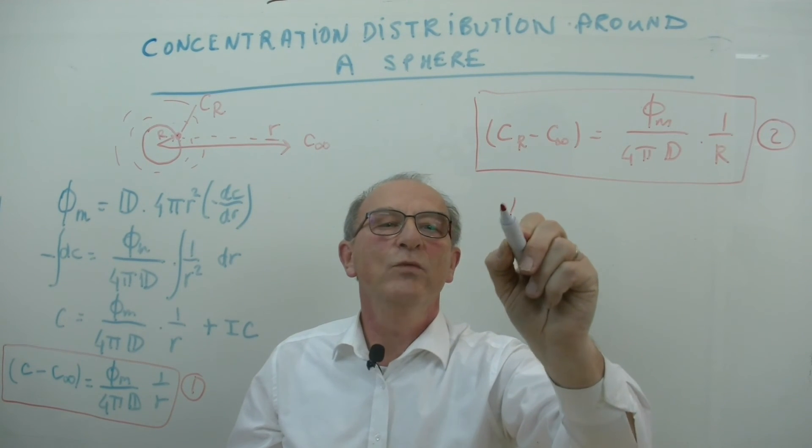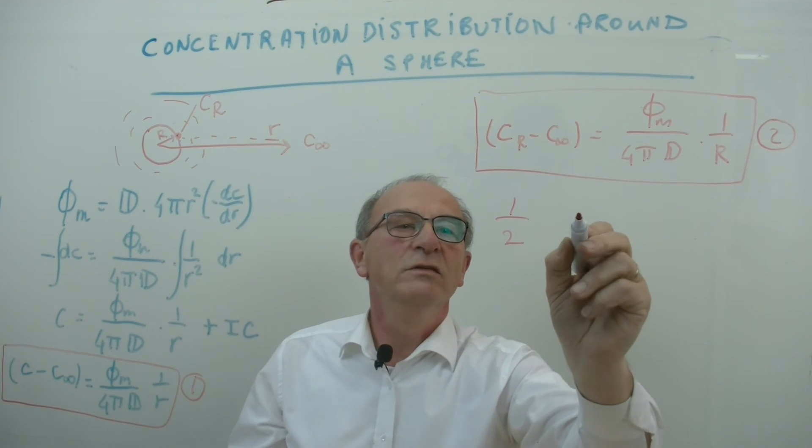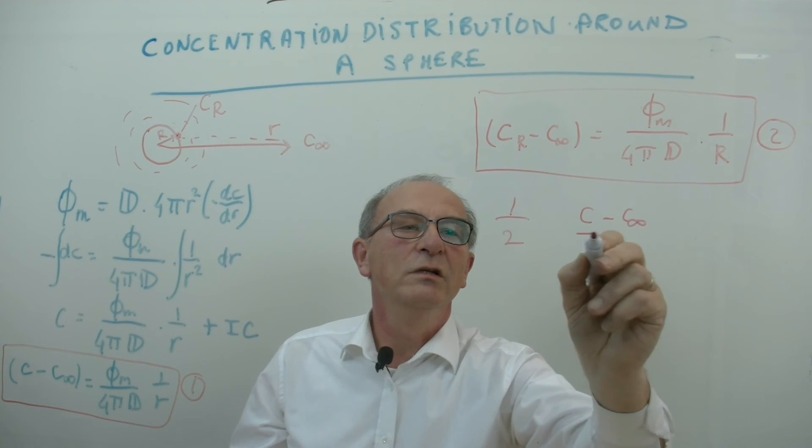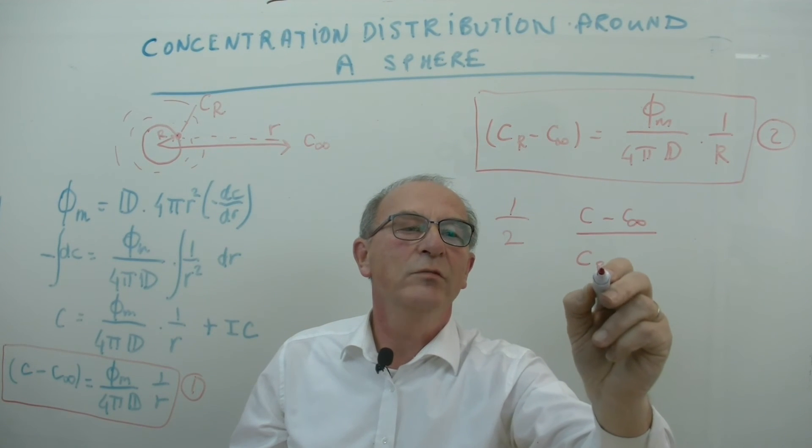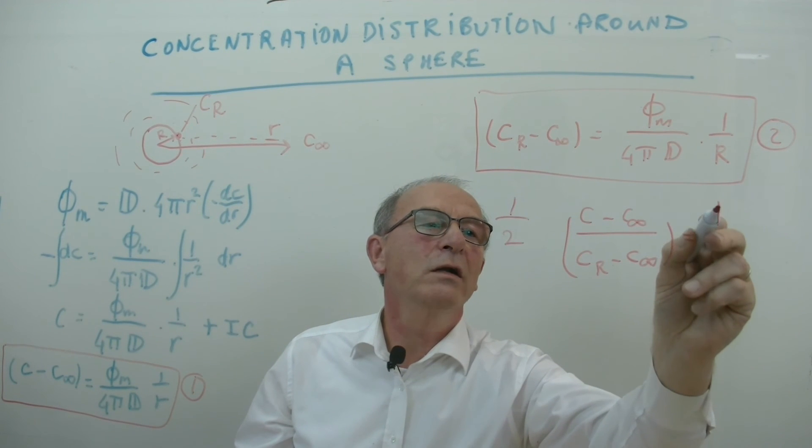Then you can divide 1 by 2 and then you get c minus c infinity divided by cR minus c infinity is R over R.